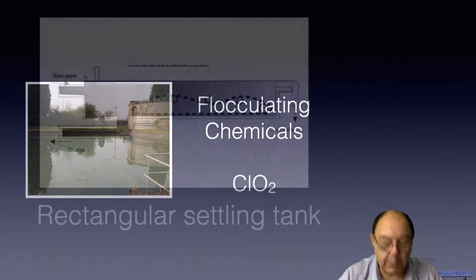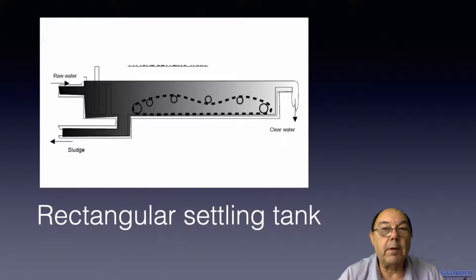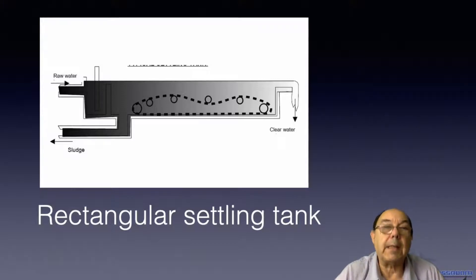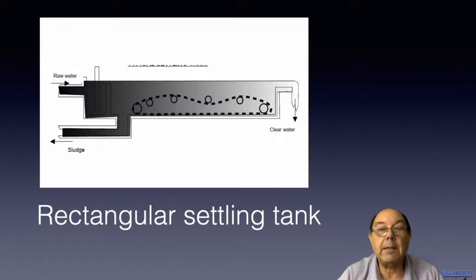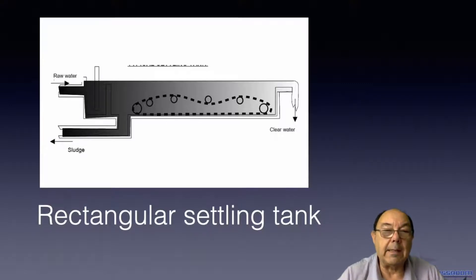Having passed through the mill pond, we may go to some form of settling arrangement — maybe a settling tank. There are three essential shapes to settling tanks: there are rectangular settling tanks, there are round settling tanks, and then there are these boxy lamella settling tanks.